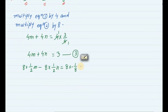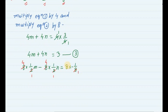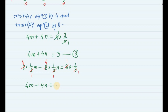This gives us equation number 4: 4m minus 4n is equal to minus 1.